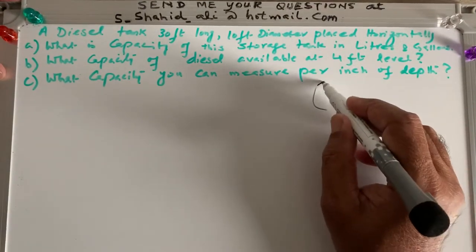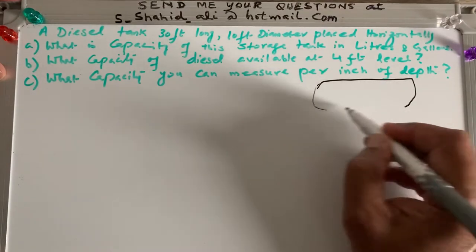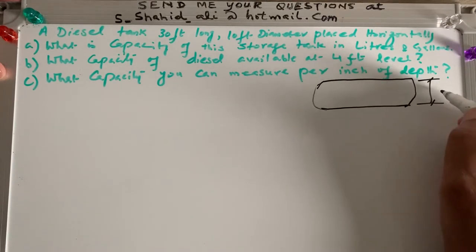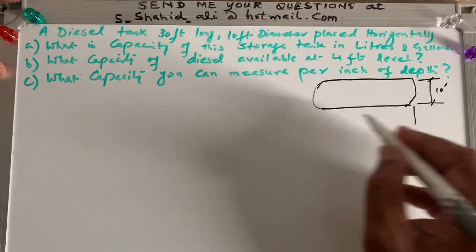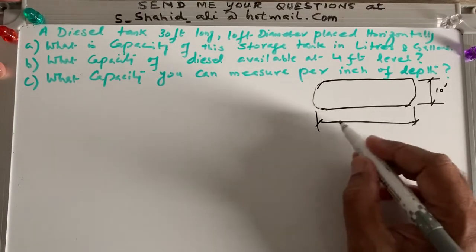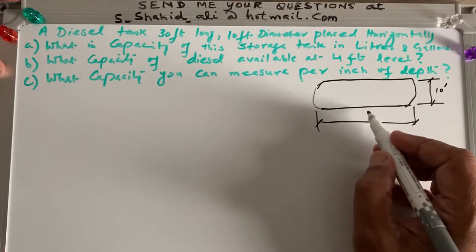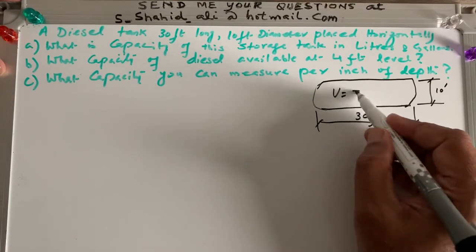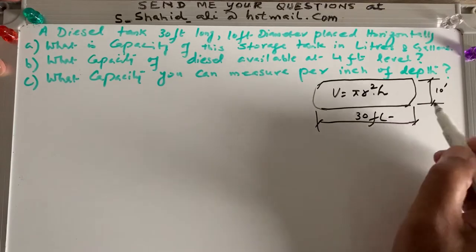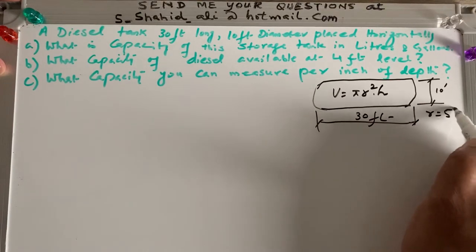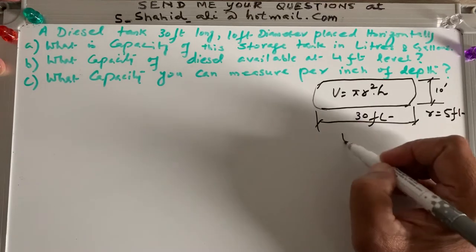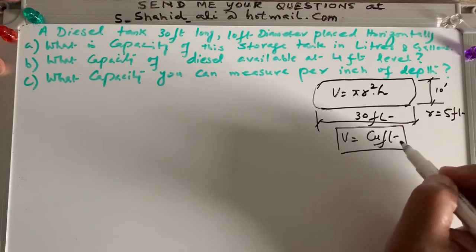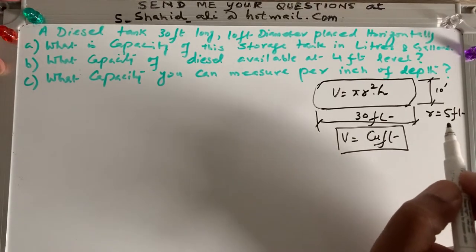A cylindrical tank like this is placed horizontally for diesel storage. So the diameter is given, which is 10 feet, and the length is given. Again, here height is replaced by the length. So length is 30 feet long. And we know that volume equals pi r squared h. So r in this case will be 5 feet. And when we solve this question, the volume will be in cubic feet. And then we have to convert these cubic feet into liters.